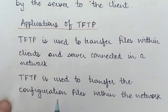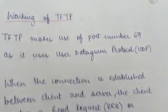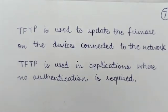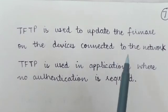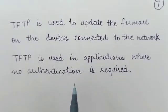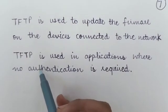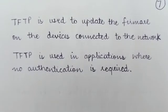TFTP is used to transfer configuration files within a network. It is also used to update the firmware on devices connected to the network. Additionally, TFTP is used in applications where no authentication is required, because it is not a reliable protocol — it uses the services of UDP, which itself does not provide reliable services.